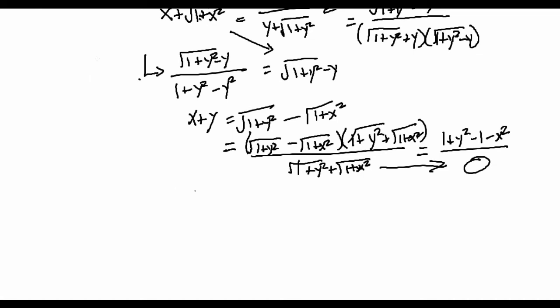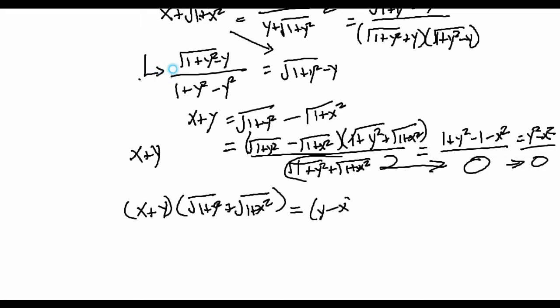So let's scroll down a bit. Remember, the left side of the equation is still x plus y. So we can multiply both sides by this quantity and we can get x plus y times square root 1 plus y squared plus square root 1 plus x squared is equal to, and remember, this is equal to y squared minus x squared, the numerator. And that simplifies into y minus x times x plus y.